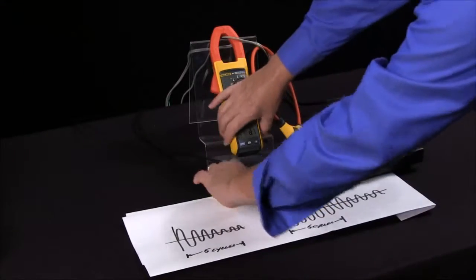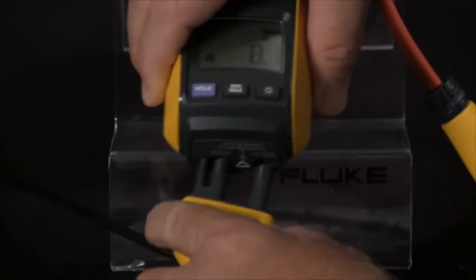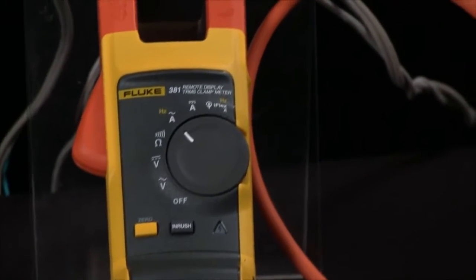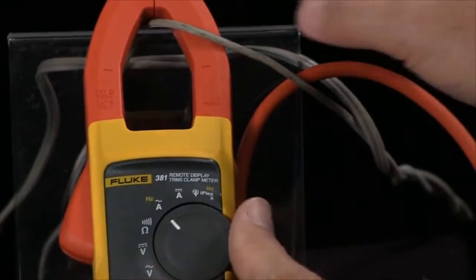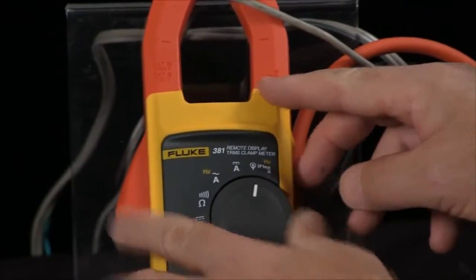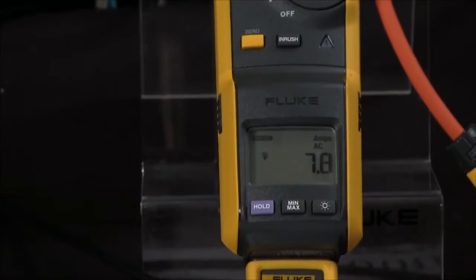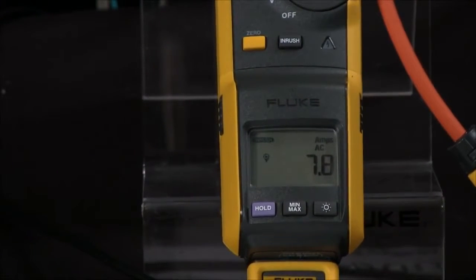This feature also works with the iFlex clamp. If you're in a tight spot, these iFlex clamps let you get into tight wires and junction boxes. Change the display over to the iFlex, hit the inrush key, start the motor, and you can get the inrush current.